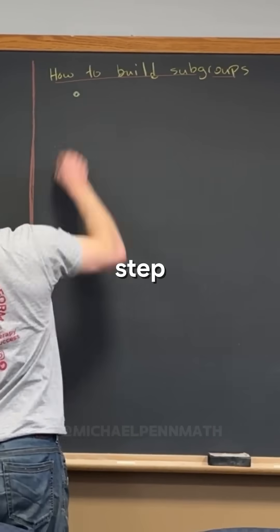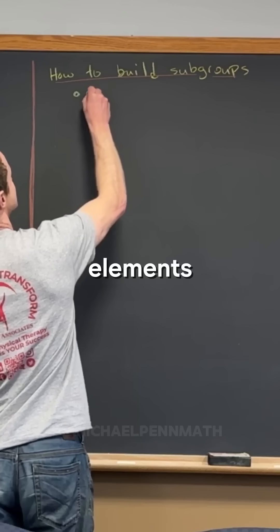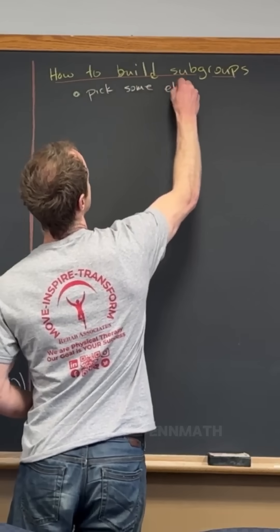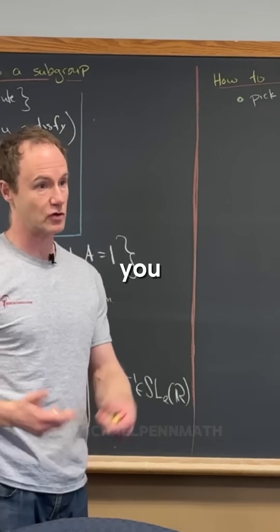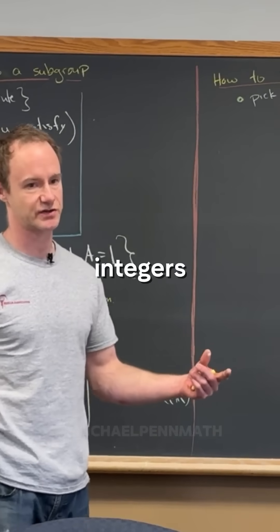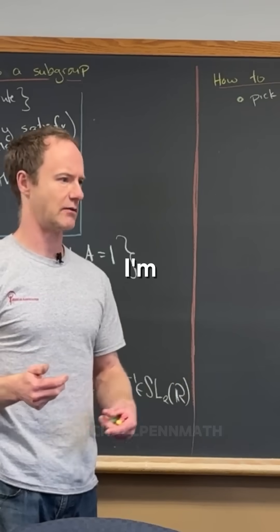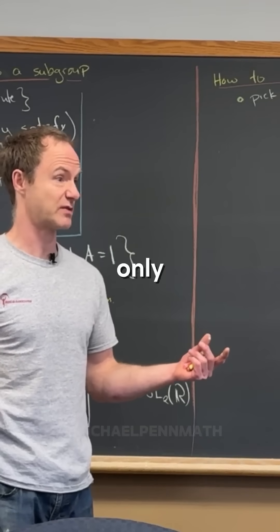The first step of the process is pick some elements. You can do this systematically or just kind of at random. You look at your group—maybe your group is the integers. Now pick some elements. I'm going to pick three. Maybe I'll just only pick one element.